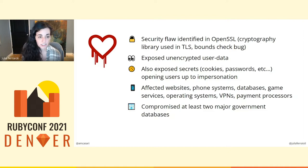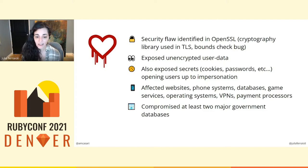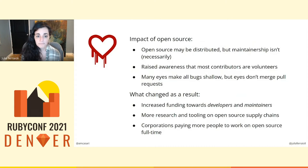Heartbleed affected a variety of systems, including phone systems, payment processors, gaming services, and most websites. Given that Apache and Nginx servers were both susceptible to Heartbleed, it affected at a minimum 66% of the internet, including government databases that held personally identifiable information. Heartbleed was definitely a black swan event in the history of open source. It drew attention to the fact that while open source is distributed, maintainership doesn't have to be — and in many cases isn't. Very few people realized beforehand that OpenSSL was primarily maintained by one or two people entirely on a volunteer basis.